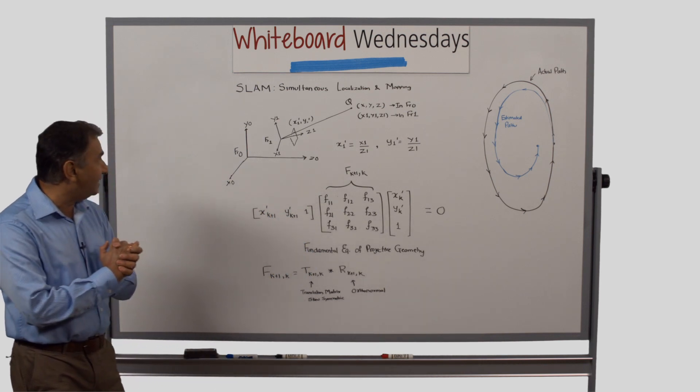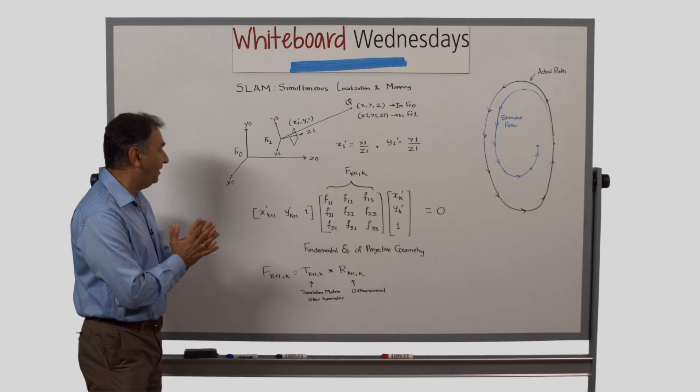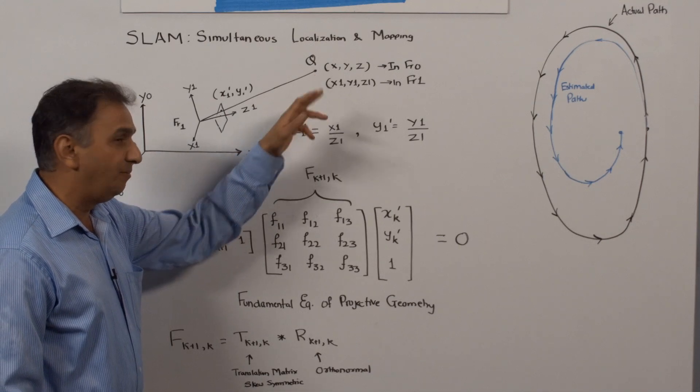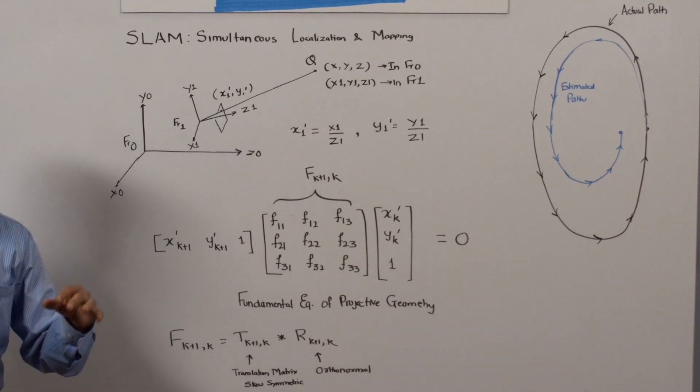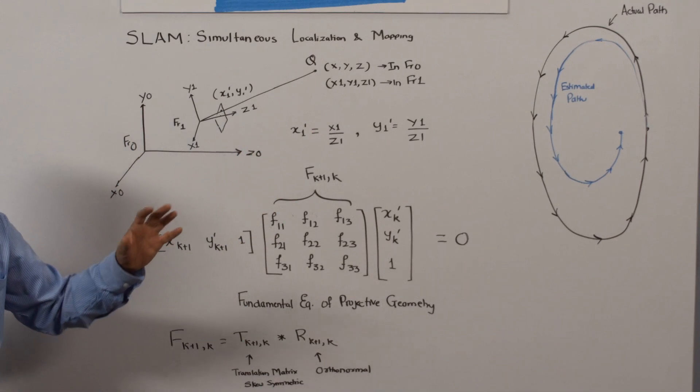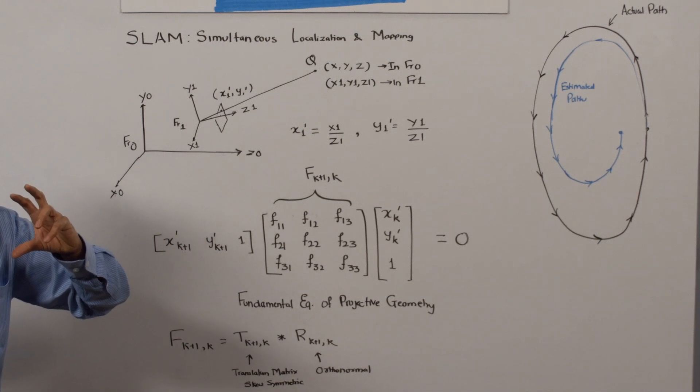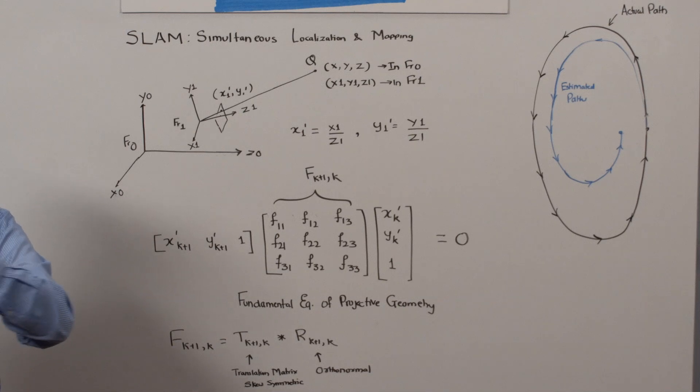Let us start with basics of projective geometry. What we have over here, Q is a key point or a point of interest in this room, and we are going to look at this point Q from various viewpoints as the camera moves.